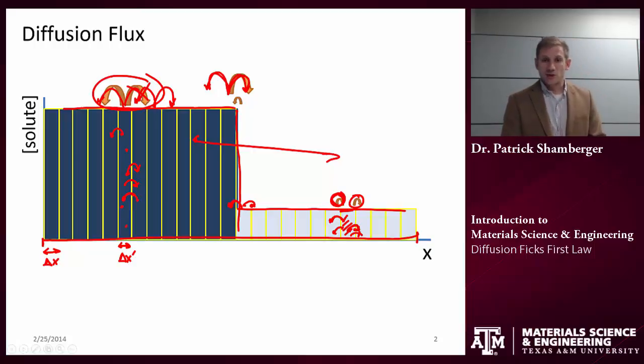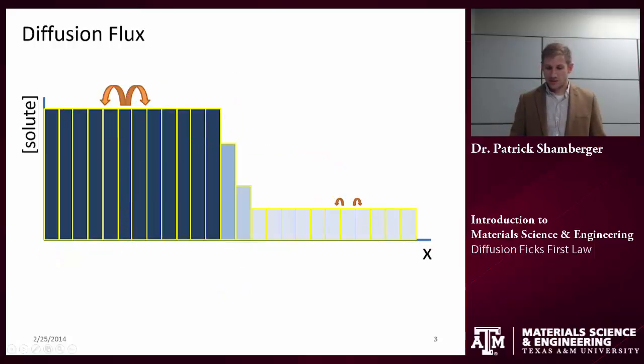But at this boundary, I have a much smaller average flux from let's say bin 2 to bin 1 than I do from bin 1 to bin 2. And I can represent that by arrows showing proportional to the flux. And so what this means is that within a given time step, I'm going to decrease the concentration here and increase the concentration here.